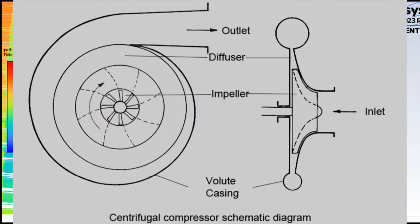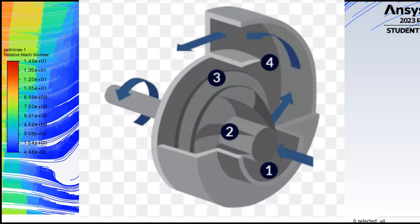Diffuser. The high-speed gas enters the diffuser after leaving the impeller so that it converts the high-velocity gas into high-pressure gas by reducing its velocity and increasing its pressure.